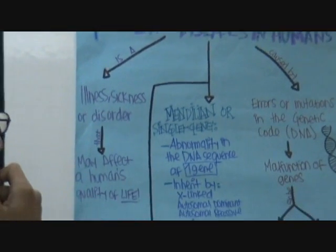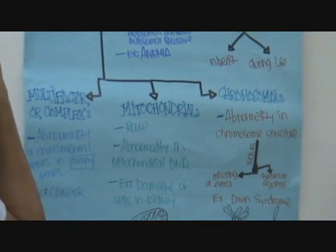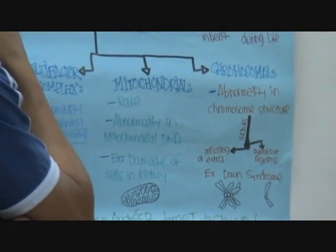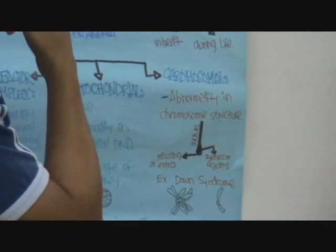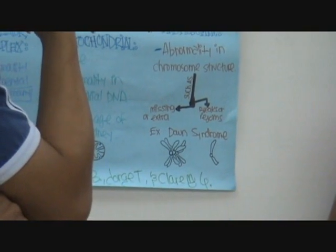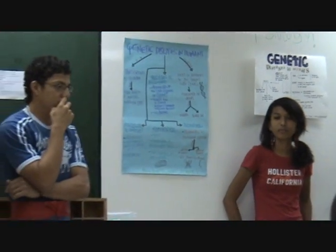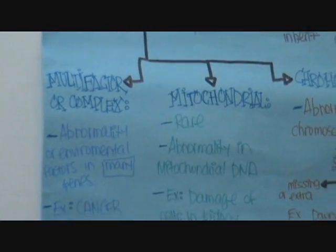In genetic diseases in humans, there are four types. The first is single gene, which is an abnormality in only one gene, and some examples can be anemia. The other type is chromosomal, which is when there is an abnormality in the chromosomes.